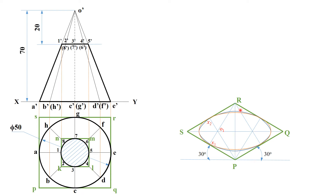The orange-colored curve represents the actual isometric view of the circle. Connect these points and transfer all the corresponding base points — A, B, C, D, E, F, G, H — onto the isometric view. This completes the base of the cone.